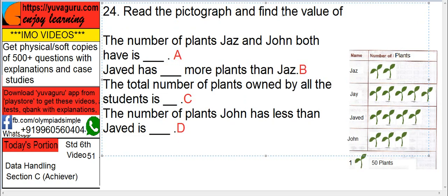Read the pictograph below and find the value of all these numbers. So this is a pictograph, name of the students are given and each student has some plants that is given. One picture of plant represents 50 plants, so accordingly we will have to find out.